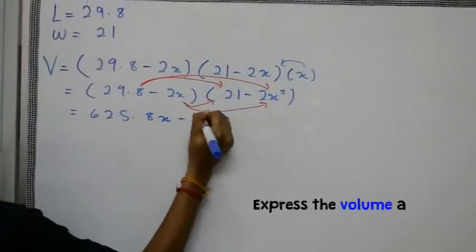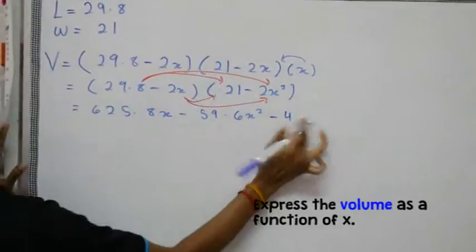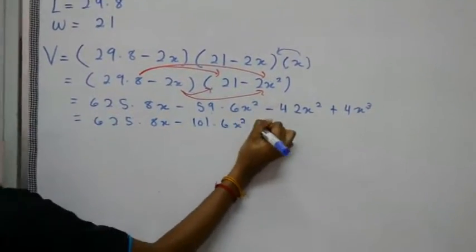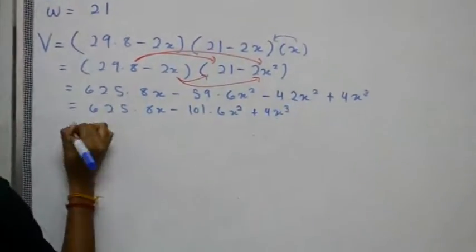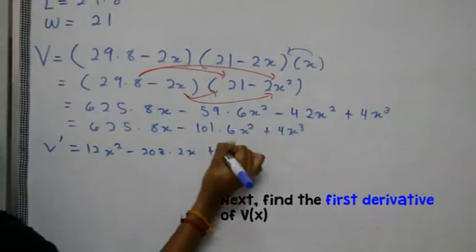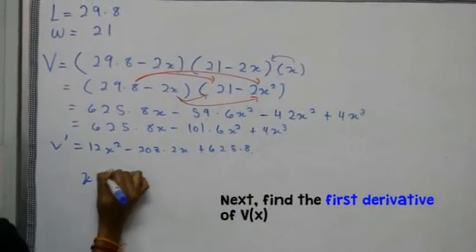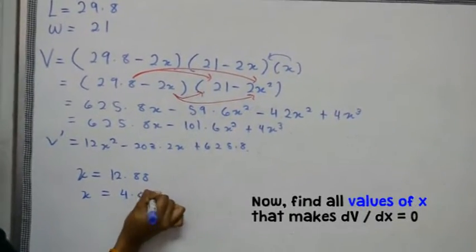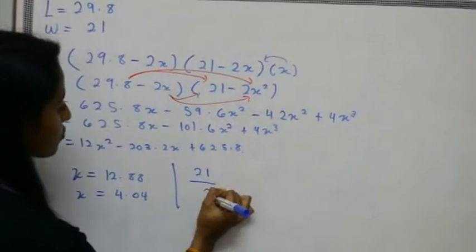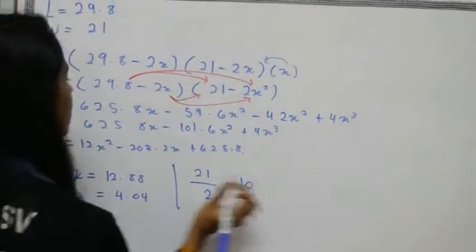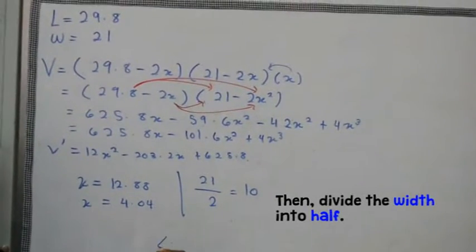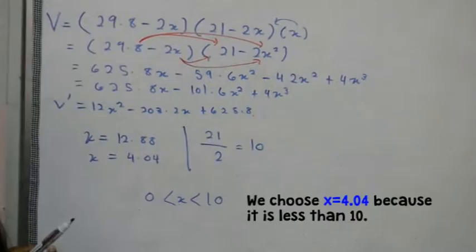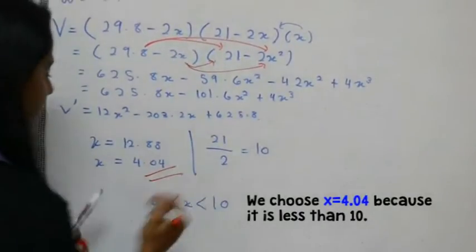Express the volume as a function of x. Next, find the first derivative of V(x). Now, find all values of x that make dV over dx equal to 0. Then, divide the width in half. We choose x equal to 4.04 because it is less than 10.